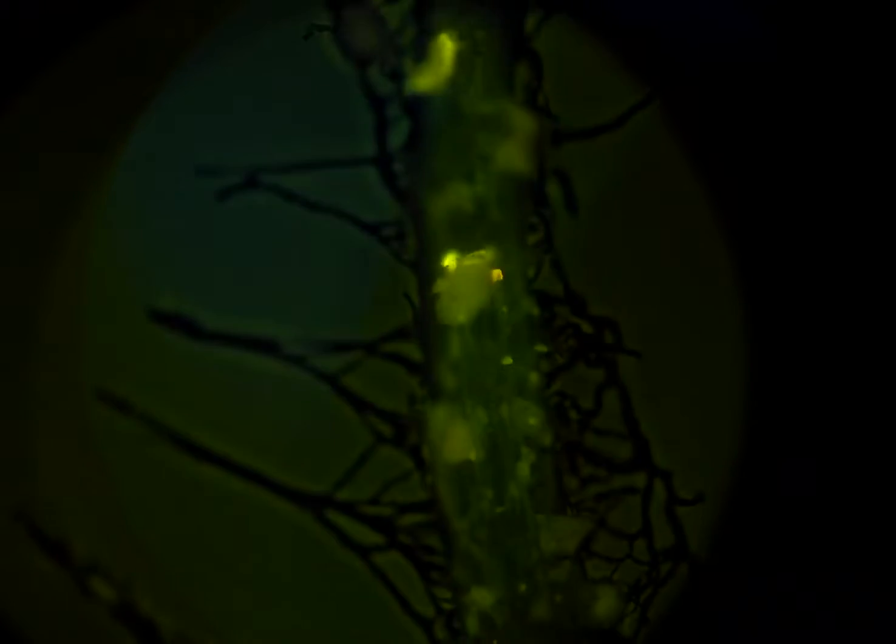But it also shows that doing a mycorrhizal inoculant on a non-mycorrhizal plant does nothing in terms of actually helping that plant. But the rhizobacteria does great. So we can use rhizobacteria to stimulate root hair growth and stimulate rapid growth and endophytic feeding in the leaves and in the roots of non-mycorrhizal plants.